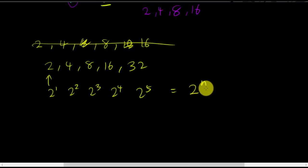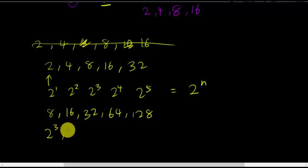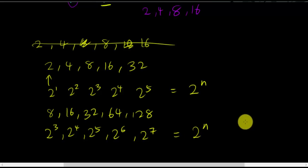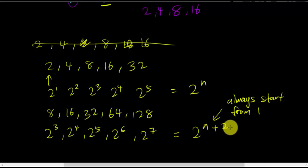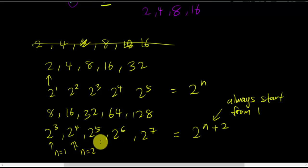To make this tougher, imagine the sequence starts at 8: 8, 16, 32, 64, 128 — which is 2^3, 2^4, 2^5, 2^6, 2^7. If you just say 2^n, your answer will be wrong because n always starts from 1. When n=1, you should get 8. So the exponent is n+2, giving 2^(n+2). This is how we solve this kind of question.